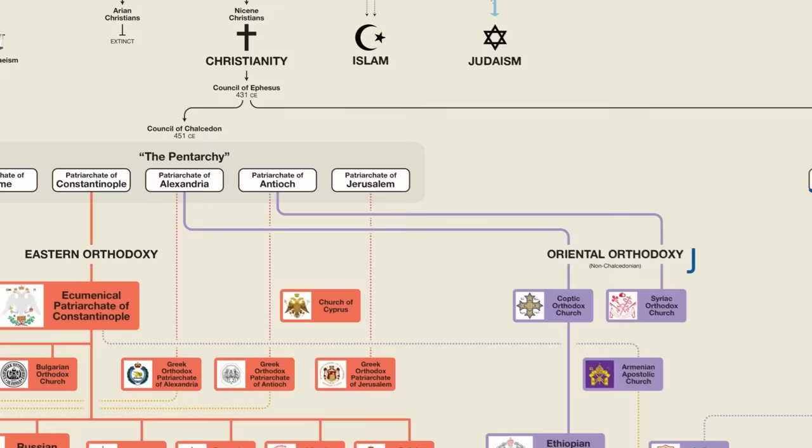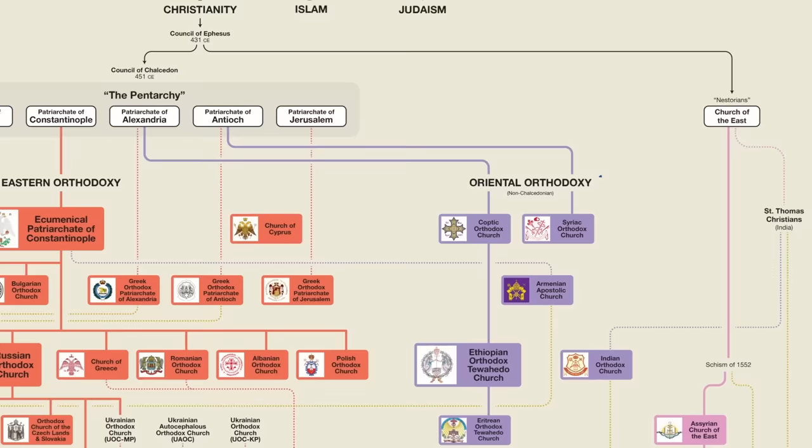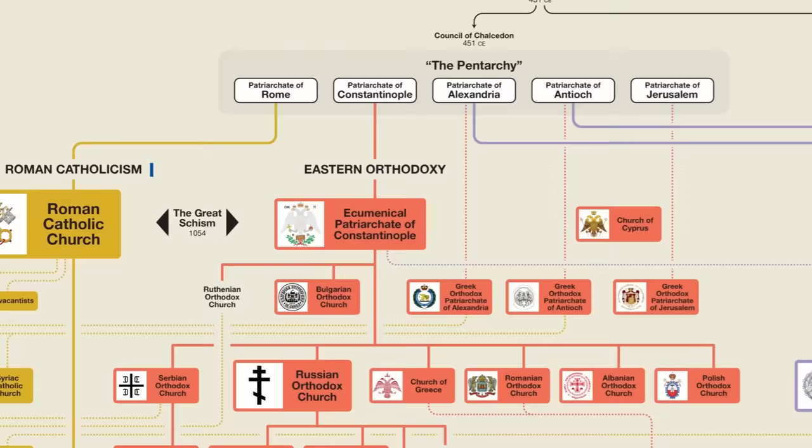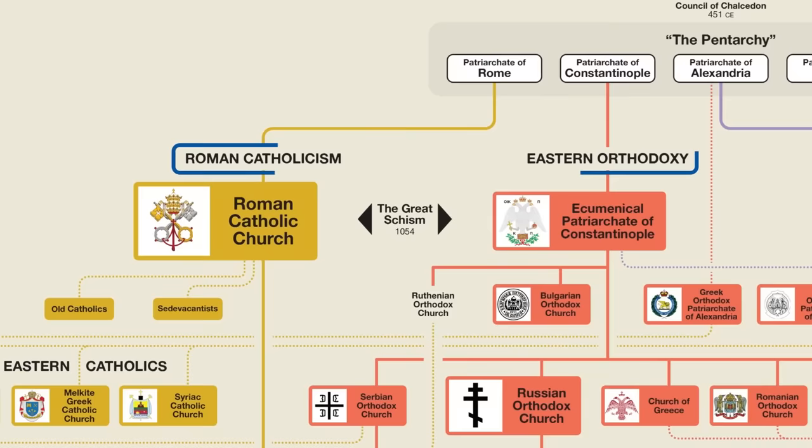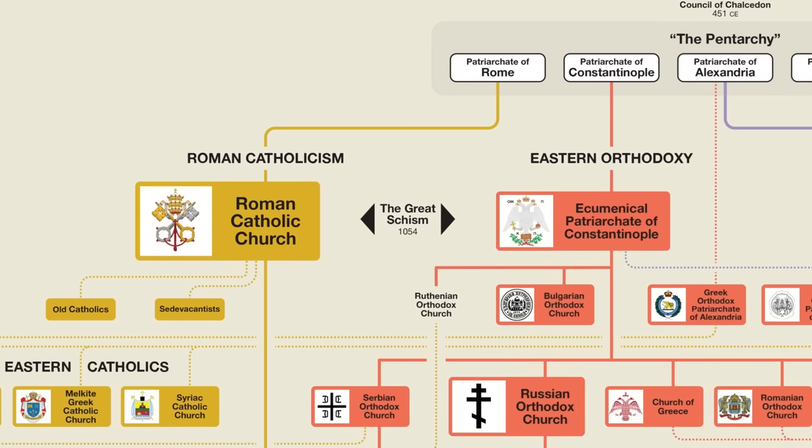In today's video, we're going to switch gears and focus on two of the largest branches of the tree: the Roman Catholic Church and the Eastern Orthodox Church. Both of these very large churches can actually be divided into various smaller churches, so we'll be looking at how each group is organized as well as the history behind how they ended up that way. Of special note will be some very recent developments involving the church in Ukraine.